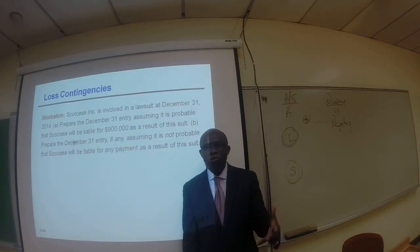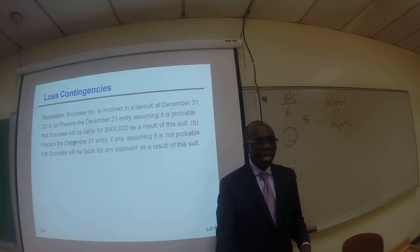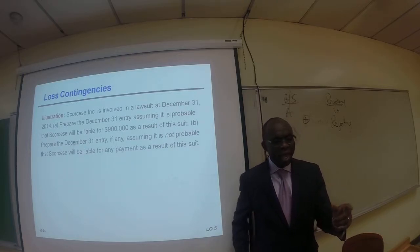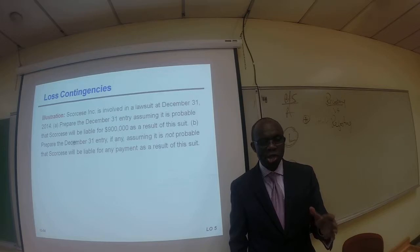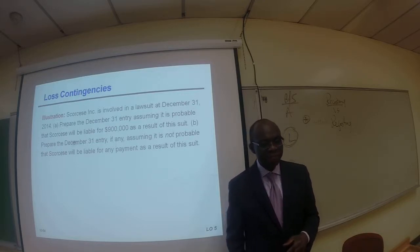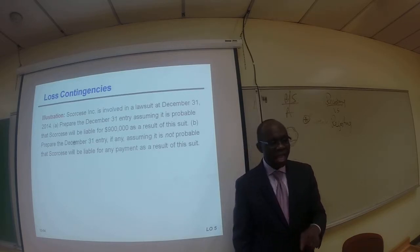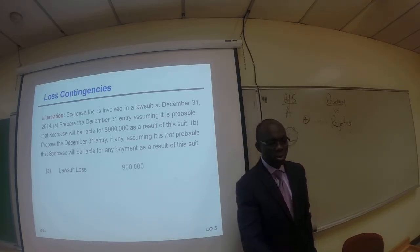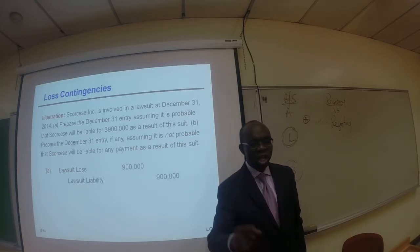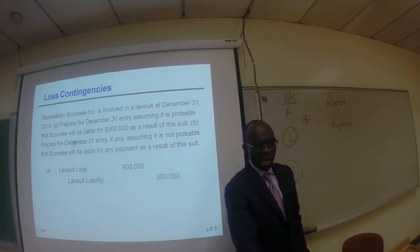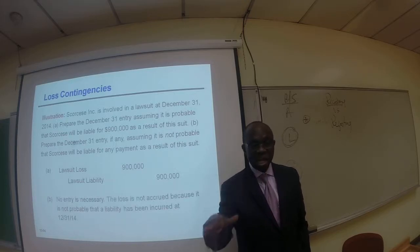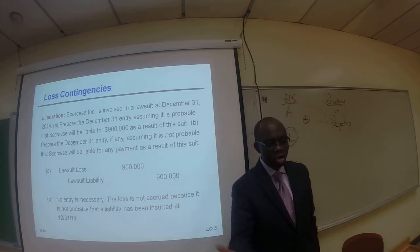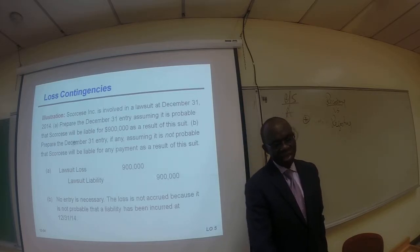Let's take a look at the application of these rules. This company is involved in a lawsuit at December 31st, 2014. Part A: we prepare the December 31st entry assuming it is probable that the company will be liable for $900,000. We debit lawsuit loss and credit lawsuit liability — this is recorded and reported in the financial statement. Part B: if it is not probable, no entry is necessary and the loss is not accrued because it is not probable that the liability has been incurred at year end.